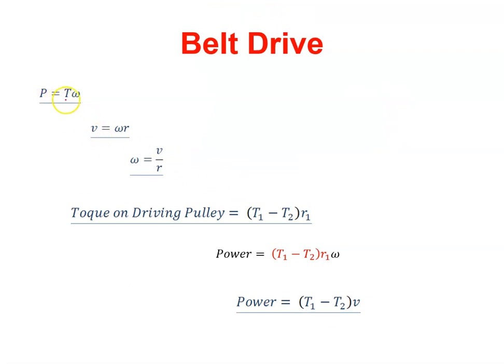We know that power is equal to torque times omega. So instead of the torque here, I know the torque is T1 minus T2 times r1. I just multiply that by omega and that gives me the power. So that's the equation for the power.